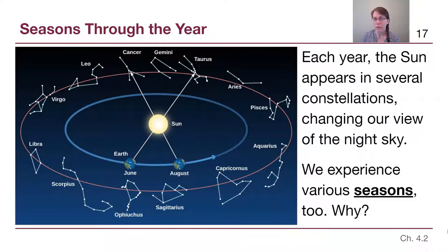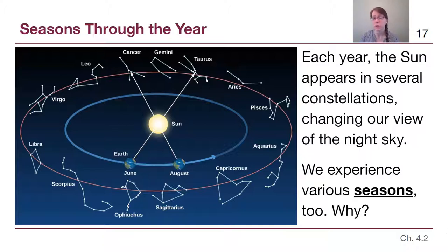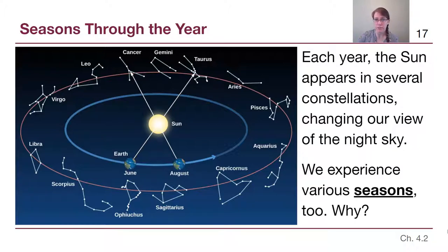Now one thing we talked about in module one is that the night sky does change from one month to the next if we're paying attention to it. Constellations that were high in the sky in the summer aren't there anymore when we're looking in the winter skies, and that's because the earth is going around the sun. But the other big annual change — the things that happen every year — are the seasons, and we need to make sure we understand why those seasons occur.